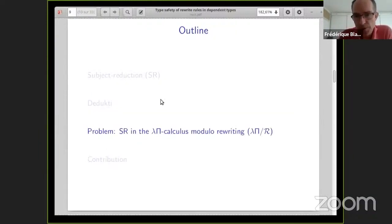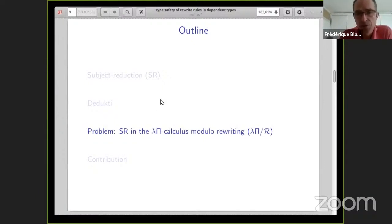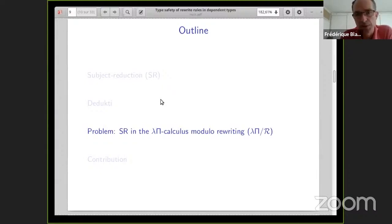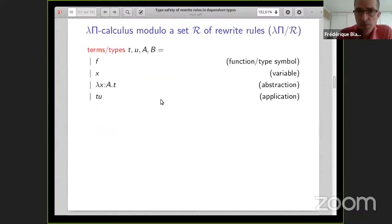Now let me explain the problem we want to solve: proving the subject reduction property, making sure that when you apply a rewrite rule in the context of Dedukti — the lambda pi calculus modulo rewriting — rewriting will indeed preserve typing. First, I will recall the language used in Dedukti. It is based on the lambda calculus, so you find the standard term constructors: constants for function symbols and type symbols, variables, lambda abstraction, and application.